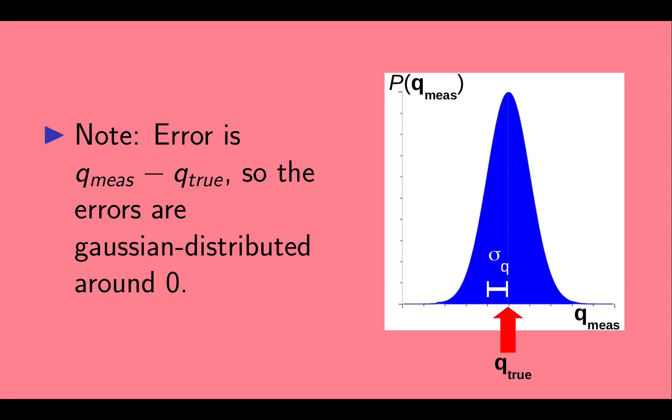Also note that the error is q measured minus q true. So the errors are Gaussian distributed around zero.